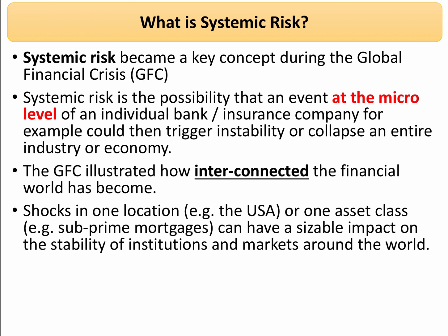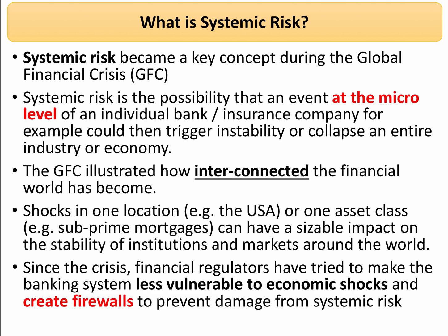For example, the classic example is the shock in the subprime mortgage markets in the United States had a huge effect on the financial stability and profitability of institutions and markets around the world, including, of course, in the UK. Since the financial crisis, there's been a rush by regulators to try and make the banking system in particular more resilient, less vulnerable to economic shocks, and in particular to try to create firewalls through regulation to prevent the damage that can come from systemic risk.